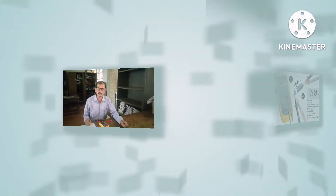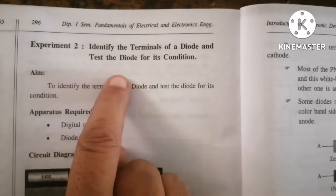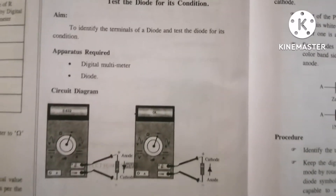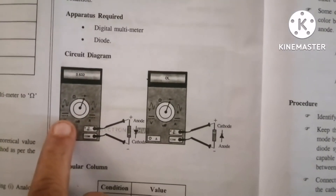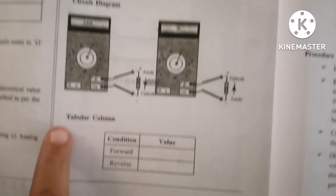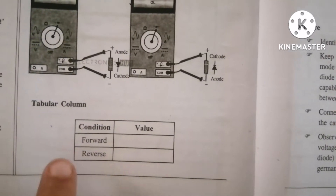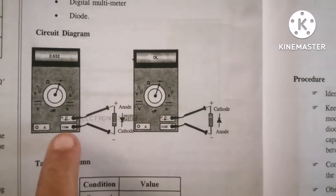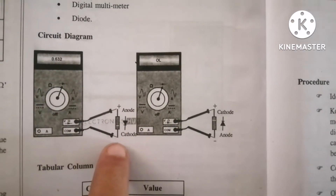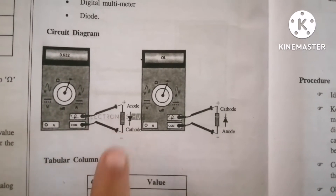This is the experiment: identify the terminals of the diode and test the diode for its condition. The apparatus required for this is a diode and a multimeter. A tabular column is there in which it is clearly mentioned forward and reverse. When the positive of the meter is connected to the positive of the diode, that is P, and the negative of the diode is connected to the negative, that is the common terminal of the meter, it is called forward bias.